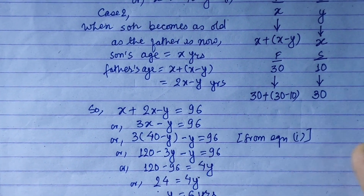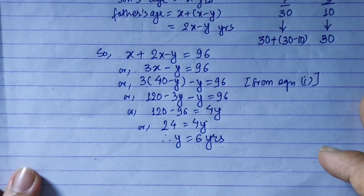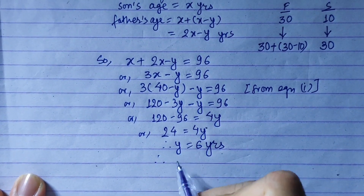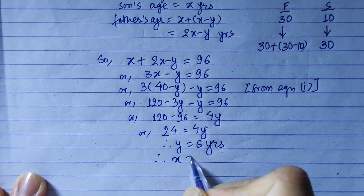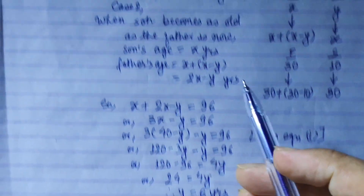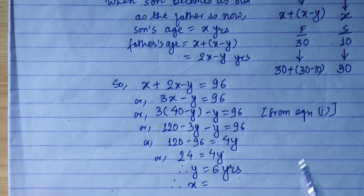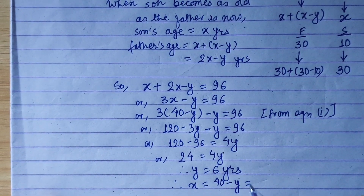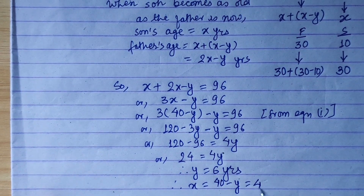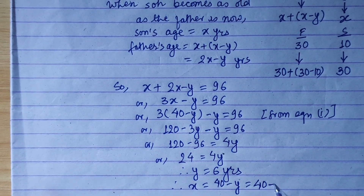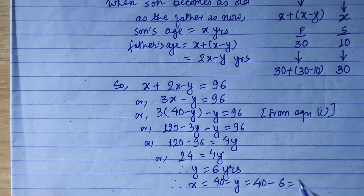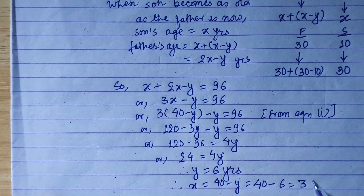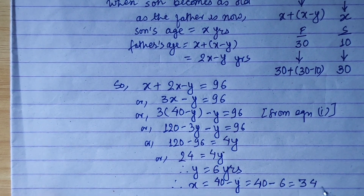So y is equal to 24 divided by 4 — y is 6 years. Now we will replace y with 6 years: x is equal to 40 minus y, which is 40 minus 6, and that equals 34 years.